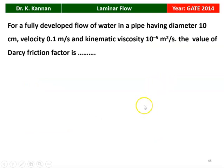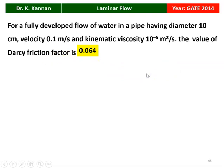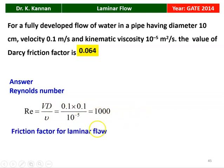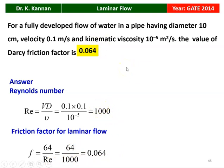The next question from the 2014 question paper. For fully developed flow of water in a pipe of diameter 10 cm and velocity 0.1 m/s, kinematic viscosity 10⁻⁵ m²/s, find the Darcy friction factor. Reynolds number = V·D/ν = 0.1 × 0.1/10⁻⁵ = 1000. Friction factor for laminar flow f = 64/Re = 64/1000 = 0.064. That is the answer.